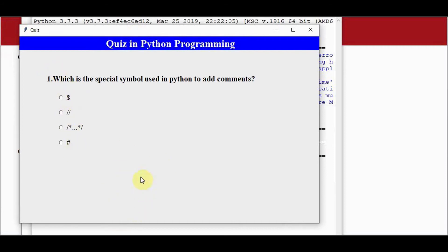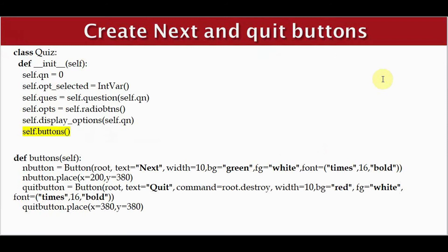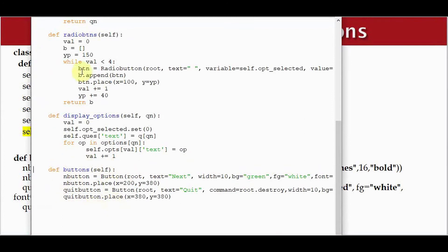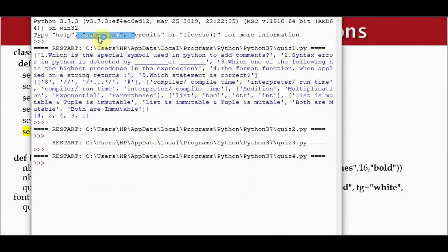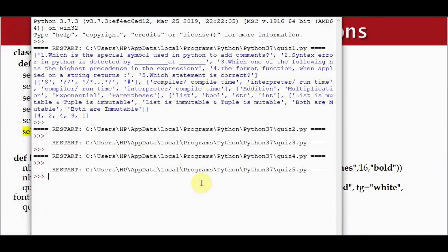The next step is to create the Next button to navigate to the next question. We are creating two buttons: a Next button and a Quit button. The command for the Quit button is root.destroy, so whenever you press it, the tkinter window will close. The command for the Next button will be defined in the next step. After adding these buttons, we can see both appear in the window. If you click Next, nothing happens yet, but pressing Quit closes the window.